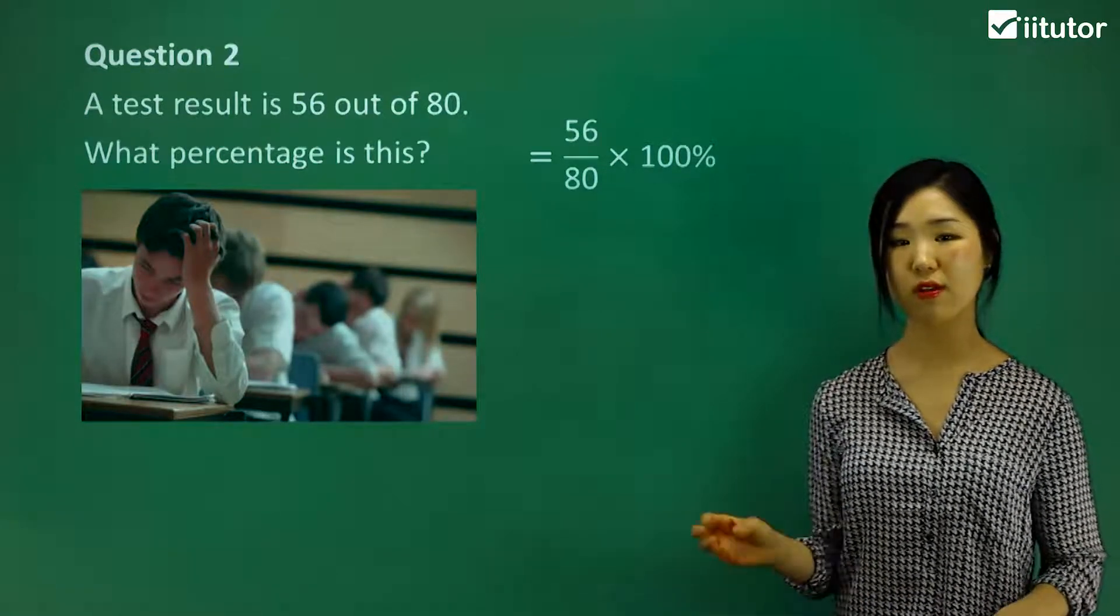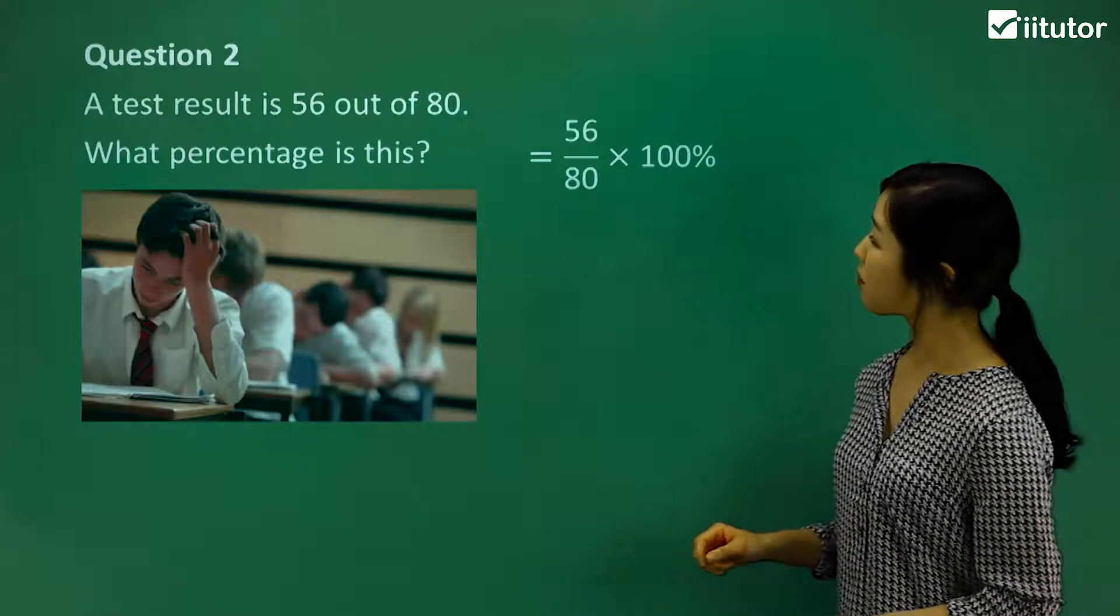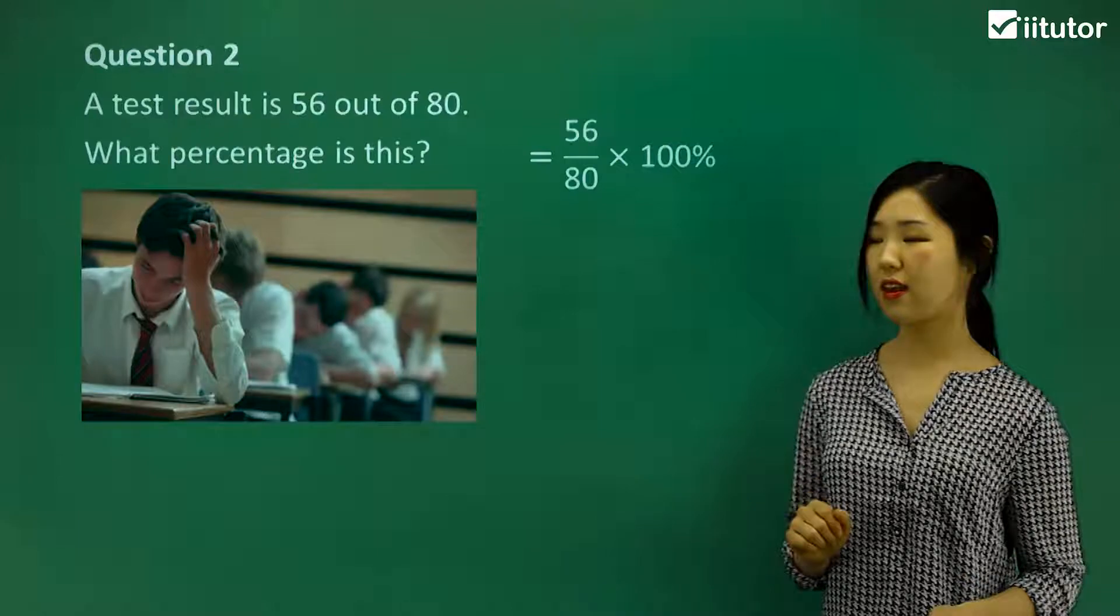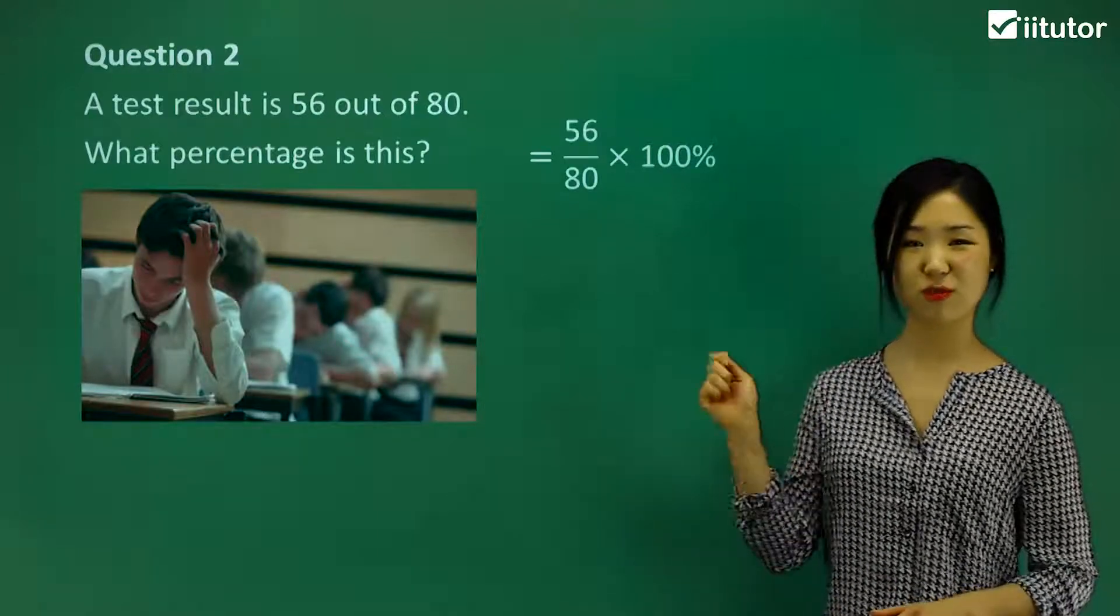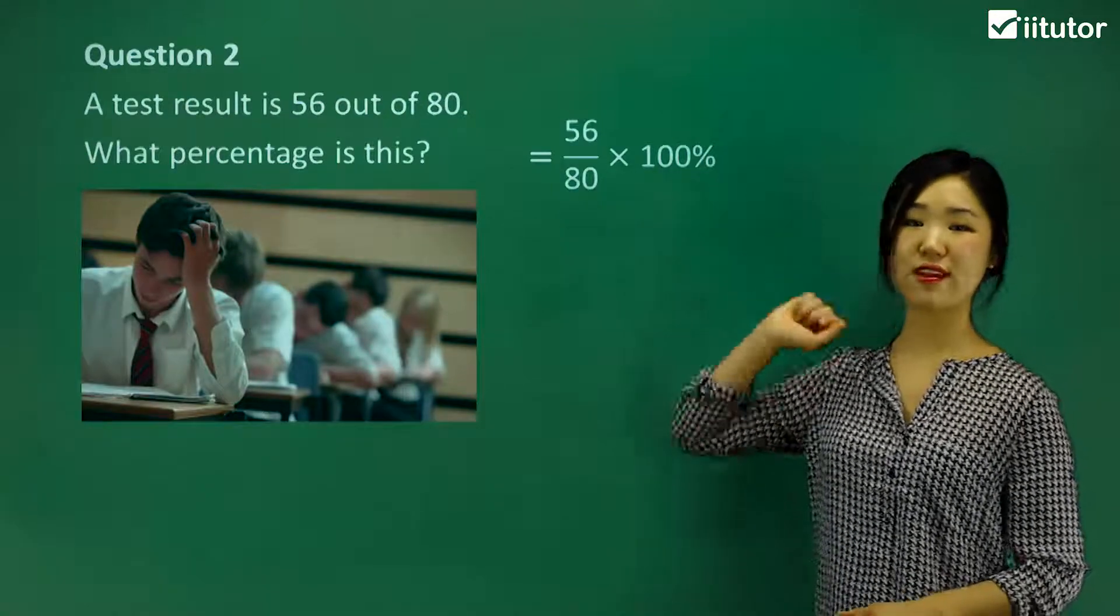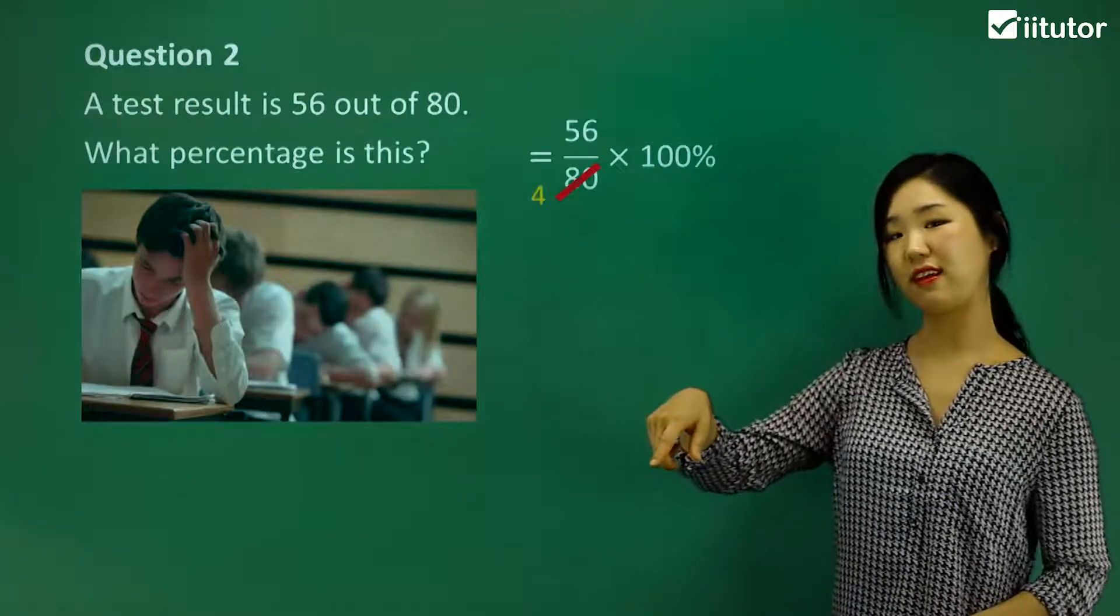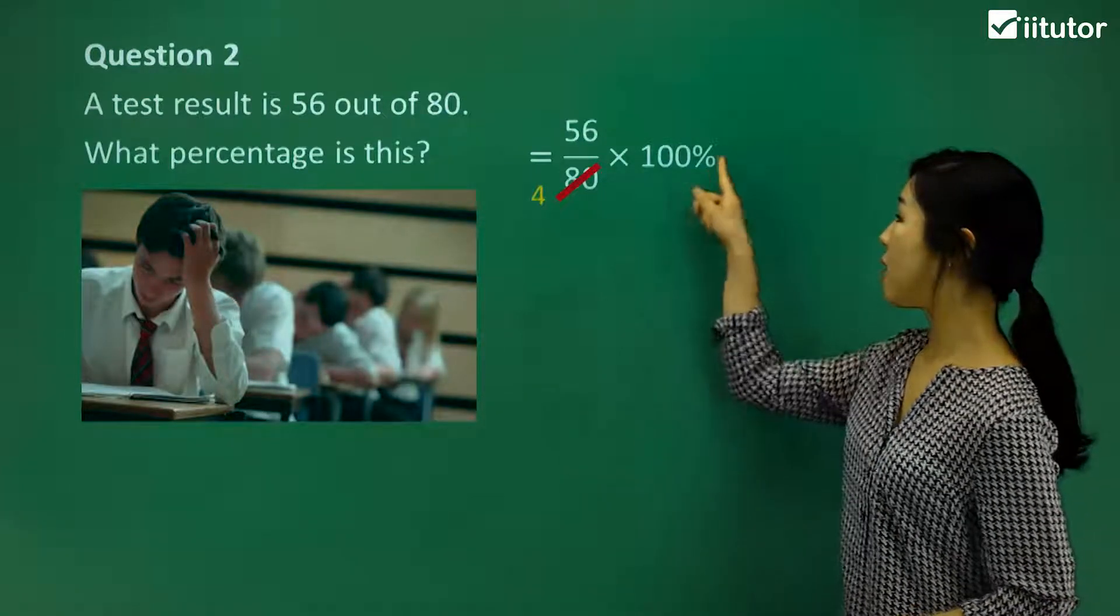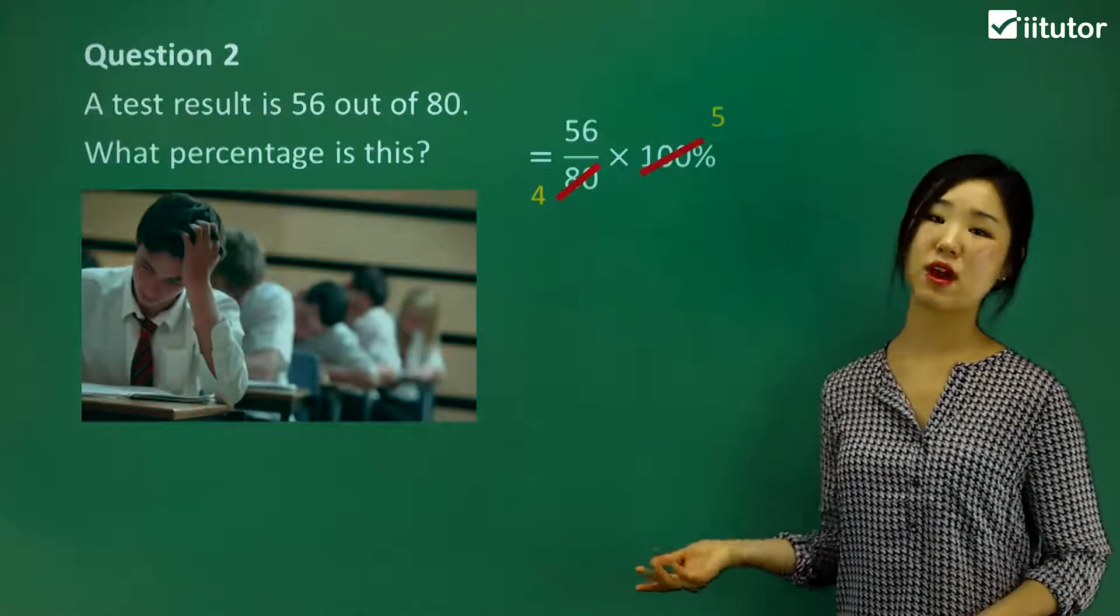So multiply by 100 and stick a percentage sign at the end. To simplify this, you can calculate it your normal way, but I like to just do some cancelling. See how 80 and 100 have common factors of 20. So I'm going to cross out the 80 and it becomes 4. And I'm going to cross out the 100 and it will become a 5.